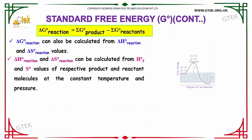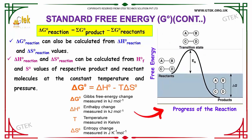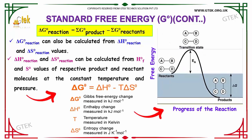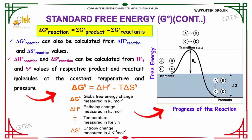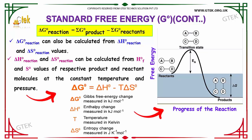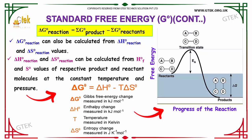Delta G° of the reaction equals the summation of G° of products minus G° of reactants. Delta G° of the reaction can also be calculated from delta H° of the reaction and delta S° of the reaction values.